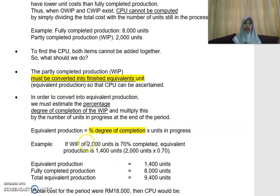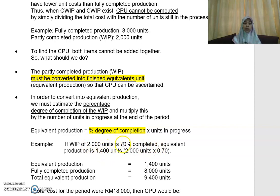For example, if your work in progress has 2,000 units, you determine the percentage of completion. Let's say it is 70% complete — then you multiply 2,000 by the degree of completion of 70%, and you will get 1,400 units.